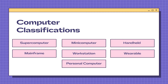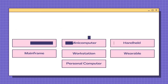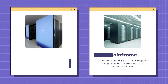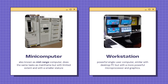The seven classifications are: the supercomputer, mainframe, and mini computer. The supercomputer is a high-performance computer commonly used for high-speed applications. The mainframe is a digital computer designed for high-speed data processing that relies on users' input and output. The mini computer performs the same tasks as the mainframe but with limited power and a smaller size.